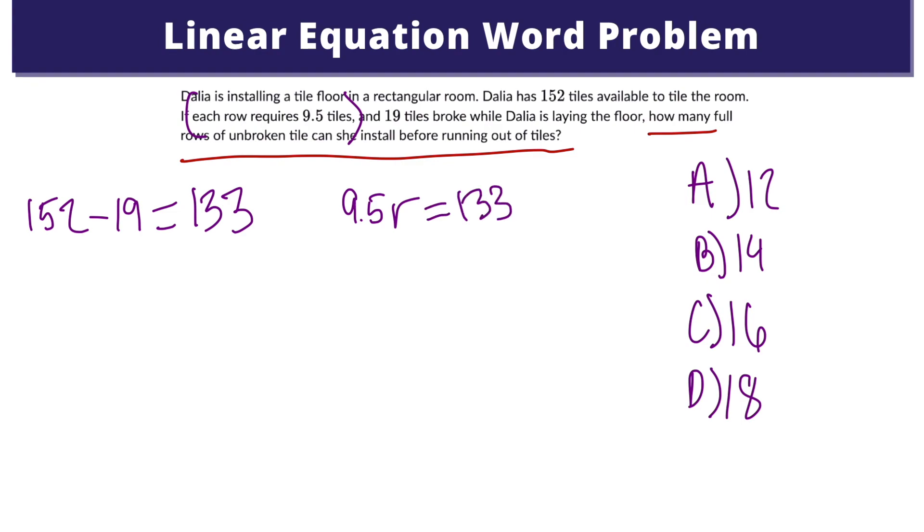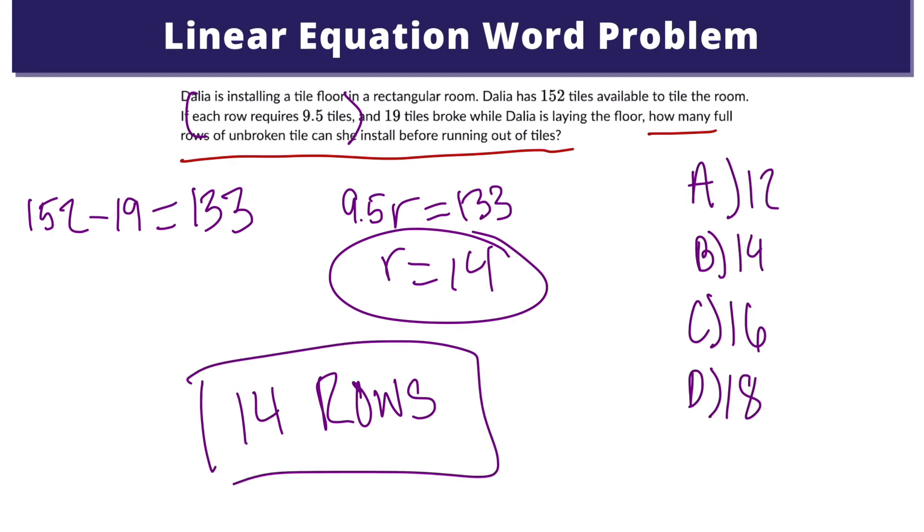And then from there, we can isolate for our r. And that gives us r equals 14. So that tells us that she will be able to make 14 rows. And that is our answer to this problem.